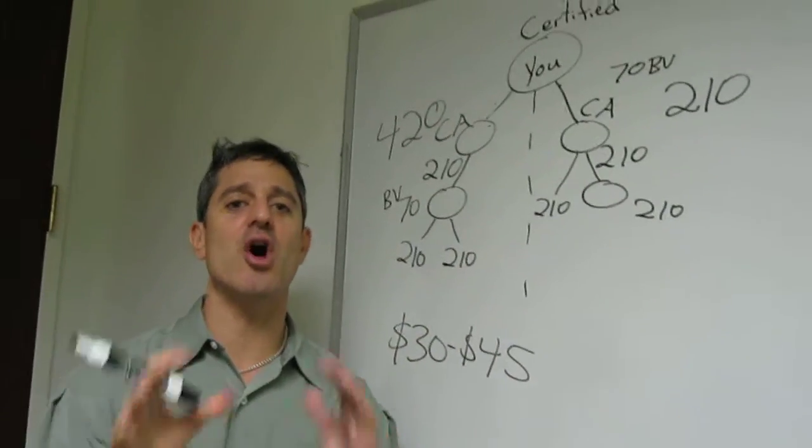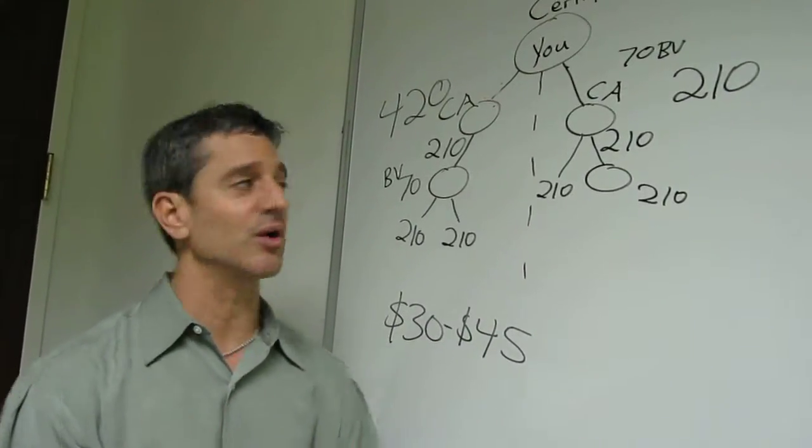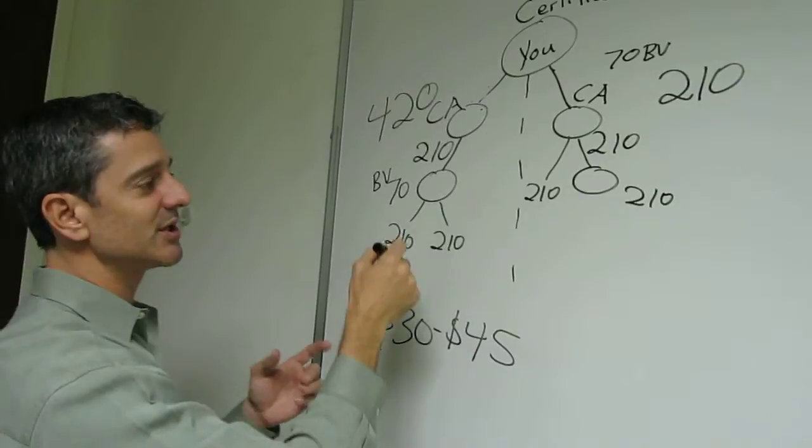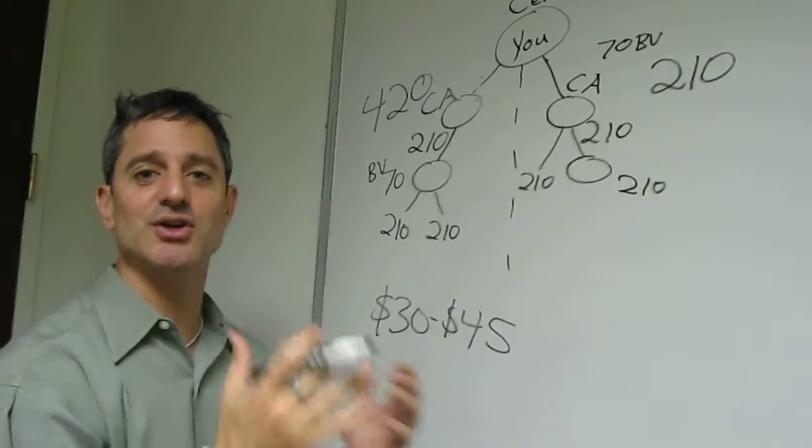Now, some of you watching this may go, oh no, my first two people were basic affiliates. It's not the end of the world. If you bring in your third person, your fourth person, your fifth person, they're going to be worth 70 BV points if they're a certified affiliate anyway.